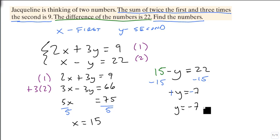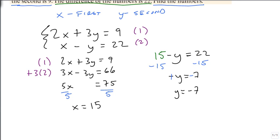We can check our answer. 15 minus negative 7, sure enough, is 22. And when we check our other equation, 2 times 15 plus 3 times negative 7 is 9. So we get 30 minus 21. Sure enough, 9 equals 9. It works for both equations, and we have our two numbers.